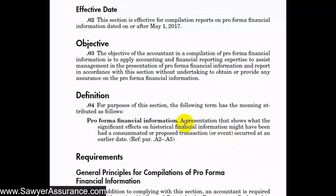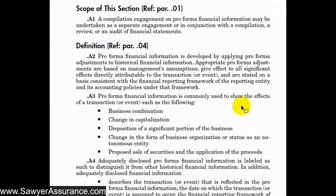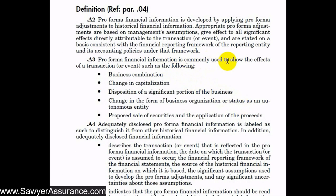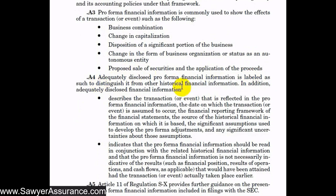Pro forma information is a presentation that shows what the significant effects on historical financial information might have been had a consummated or proposed transaction or event occurred at an earlier date. There are many different times this might be useful — for example, to show the effects of a business combination, changing capitalization, disposition of a significant portion of the business, changing the form of the business, or proposed sale of securities and application of proceeds.